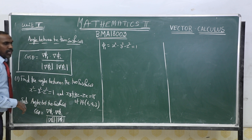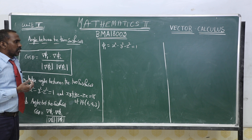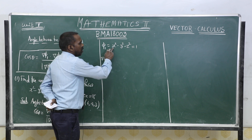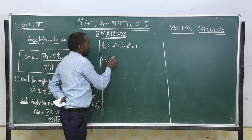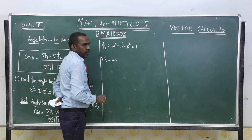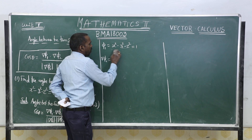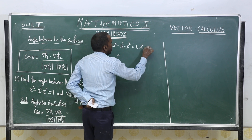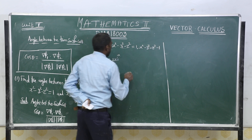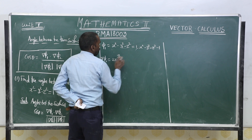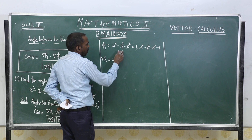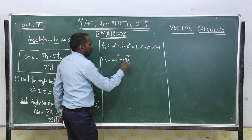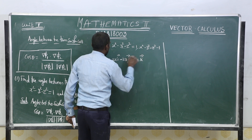Now find ∇φ₁. Delta φ is the gradient of the scalar point function. Differentiating φ₁ with respect to x gives 2x (i vector), with respect to y gives -2y (j vector), and with respect to z gives -2z (k vector). So ∇φ₁ = 2xi - 2yj - 2zk.